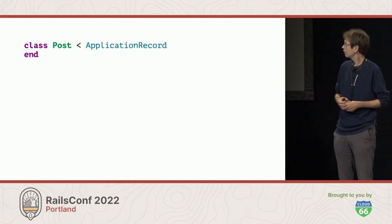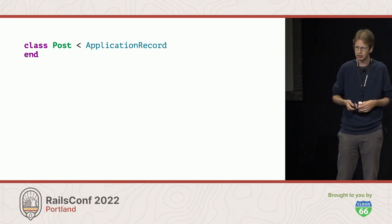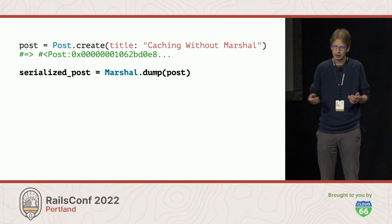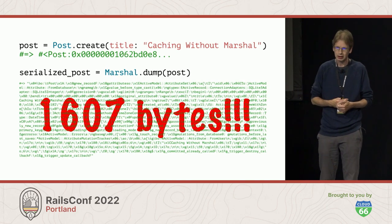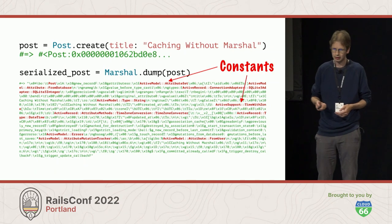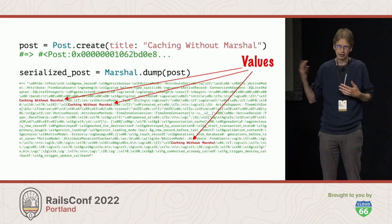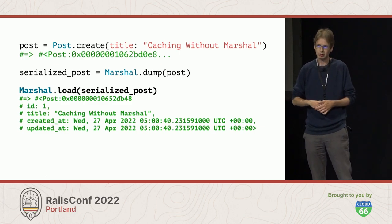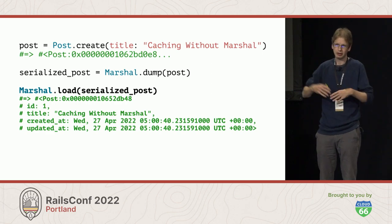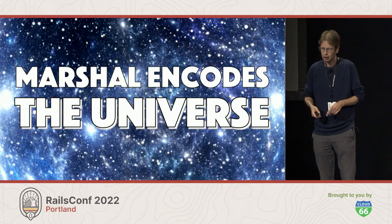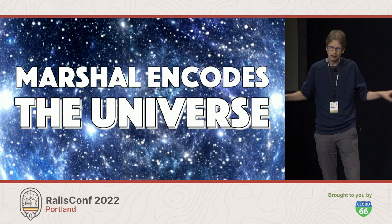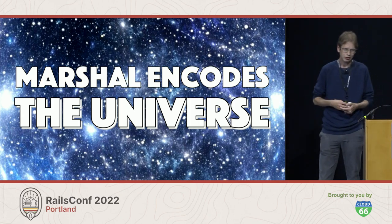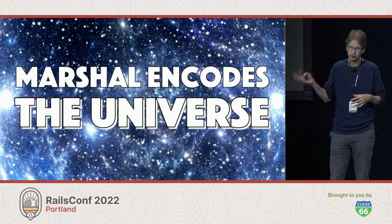I'll take a simple Post model, create a record with the title 'Caching without Marshall,' and pass it to Marshall.dump. You get a big binary blob back — about 1600 bytes. You can see it contains constants, instance variables, and values. The magic is you can pass that blob to Marshall.load and get the thing back exactly as it was — in another thread, another process, a week from now. Marshall encodes the universe: it encodes everything, ignores all concepts of privacy, and gives you back exactly what you put in. This would be great if our universe were static — but we ship every 30 minutes or an hour, so our universe is constantly changing. In that universe, Marshall doing this is actually quite risky.